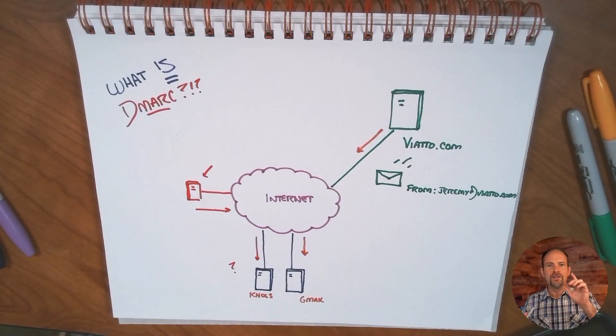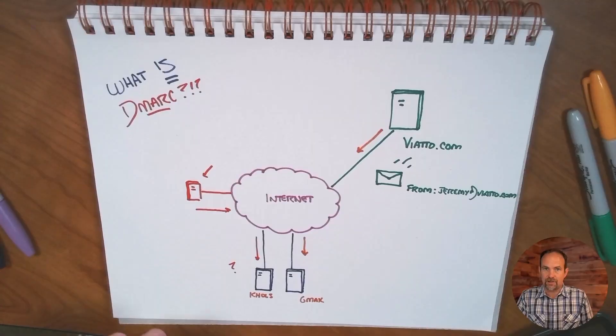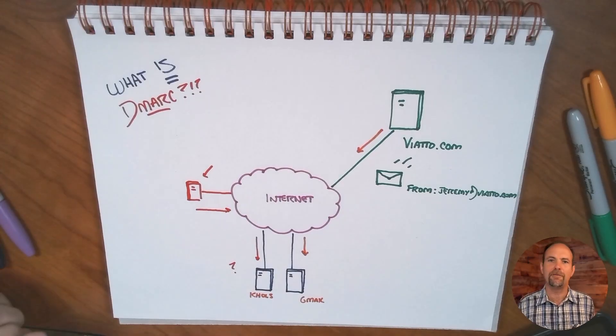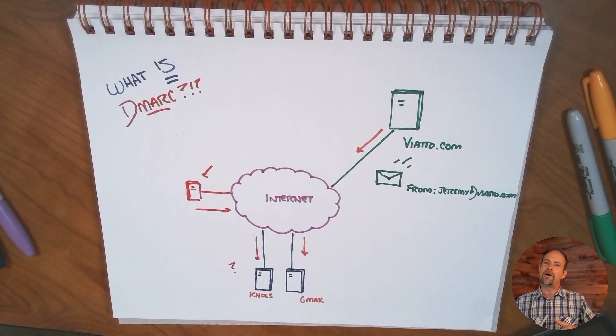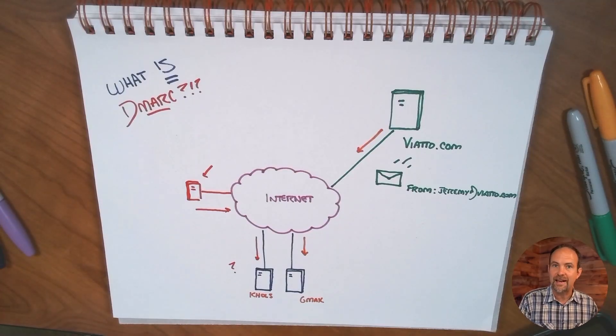DMARC solves that — actually it solves both challenges. One, to make sure that fraudulent emails are kept at bay. But two, to increase the reputation of those that are sending genuine emails. Now, the big challenge that we have is this is actually one of the simplest email setups you can have. As viato.com grows, we're going to have other sources send as us as well.